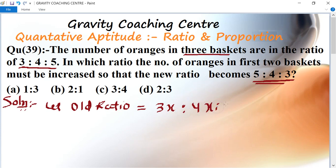Let the old ratio equal to 3x, 4x, 5x. And the new ratio equal to 5y, 4y, 3y. The new ratio is 5 is to 4 is to 3, means 5y ratio 4y ratio 3y.